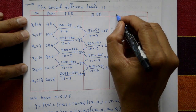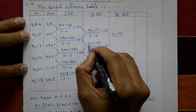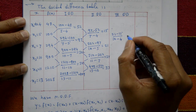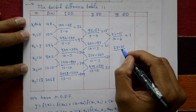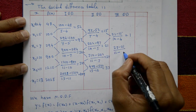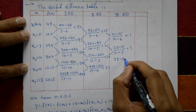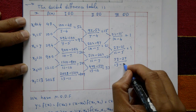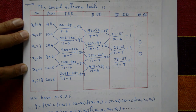Now go to the third divided differences. (21 - 15)/(10 - 4) = 1. Next: (27 - 21)/(11 - 5) = 1. Next: (33 - 27)/(13 - 7) = 1. For the fourth divided difference: (1 - 1)/(13 - 4) = 0. Every third divided difference is 1 and the fourth difference is 0.